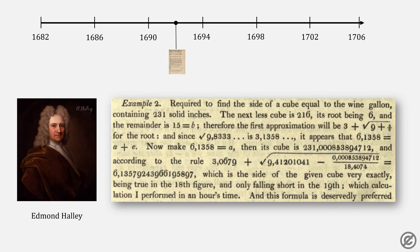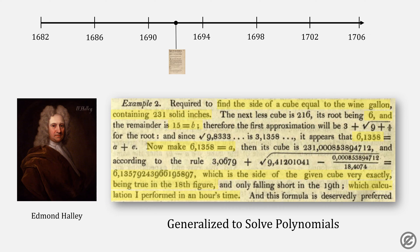Halley then gives another example: finding the cube root of a wine gallon of 231 cubic inches, letting a be 6 and b be 15. After the first iteration we get that number, and restarting with that number gives us this number, which is the size of the given cube very exactly, being true to the 18th figure — a calculation he performed in hours time. He then goes on to generalize this approach to solve any polynomial.